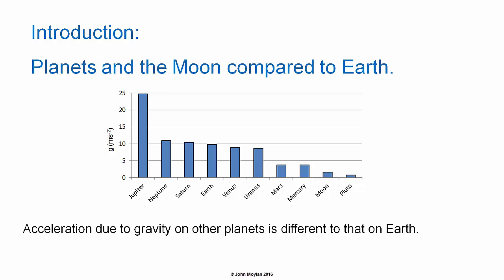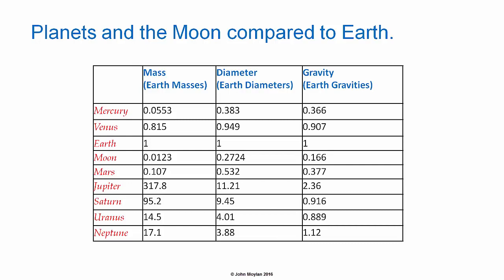Just to start, a bit of background: planets and the Moon compared to Earth. In this bar chart you can see that acceleration due to gravity varies considerably between different planets and the Moon. This table gives the values of mass, diameter and acceleration due to gravity of different bodies in the solar system in comparison with the Earth. Earth is defined as being one Earth mass, one Earth diameter and one Earth gravity, and the other planets are quoted in multiples of the values for the Earth.